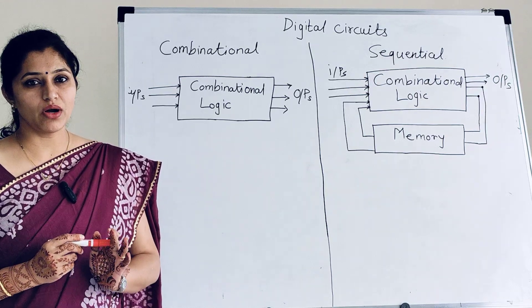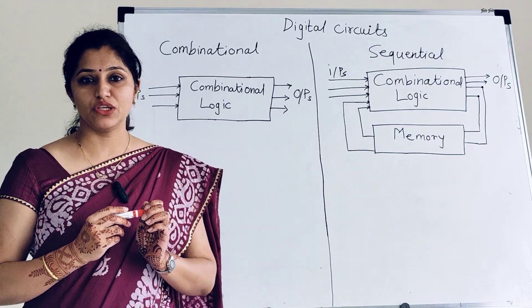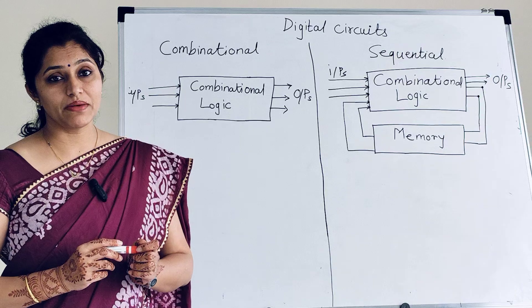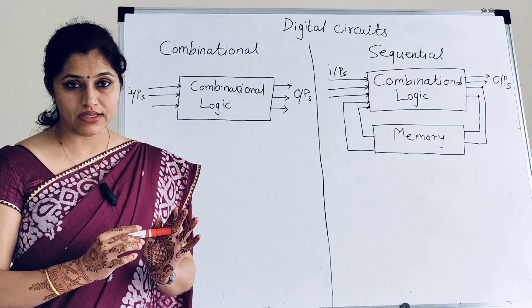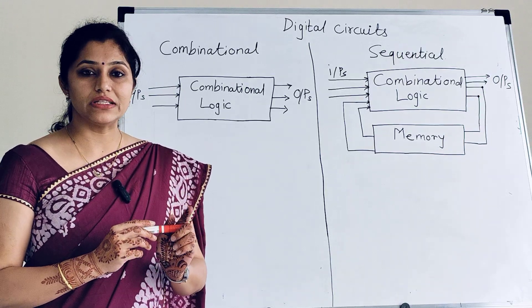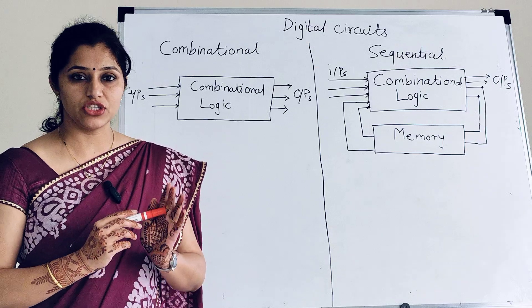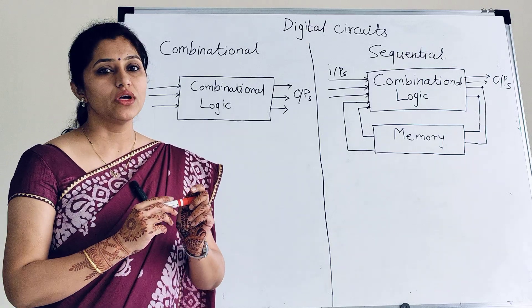In this video, we will talk about combinational circuits and sequential circuits. Both of them are types of digital circuits. It means they work on 1s and 0s. So their inputs are digital and their outputs are also digital.